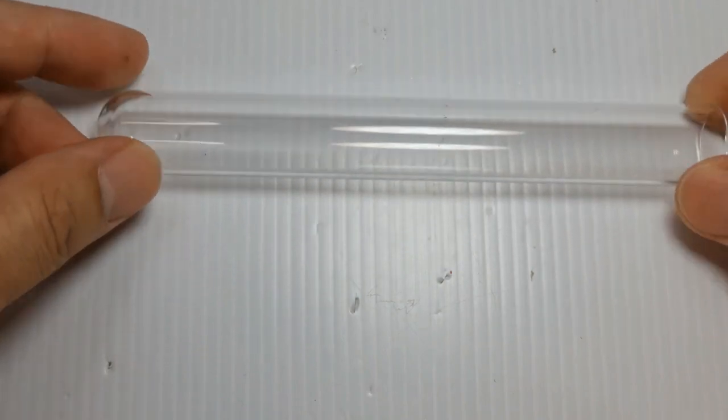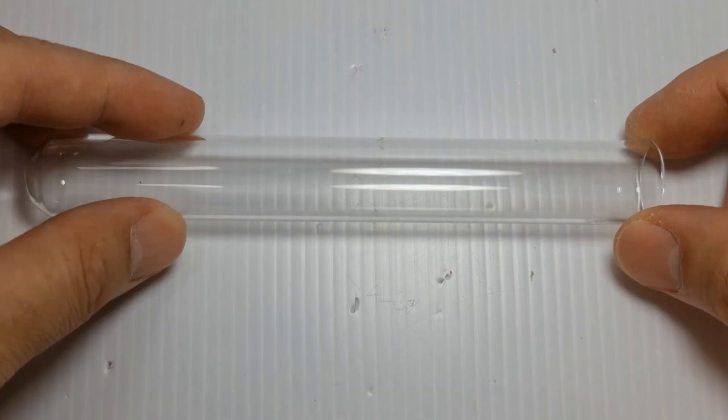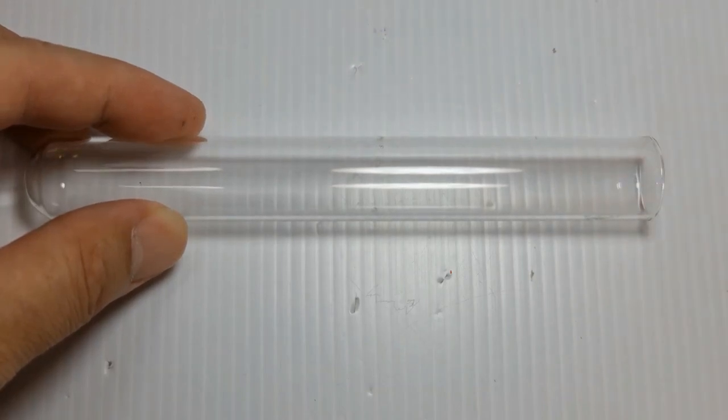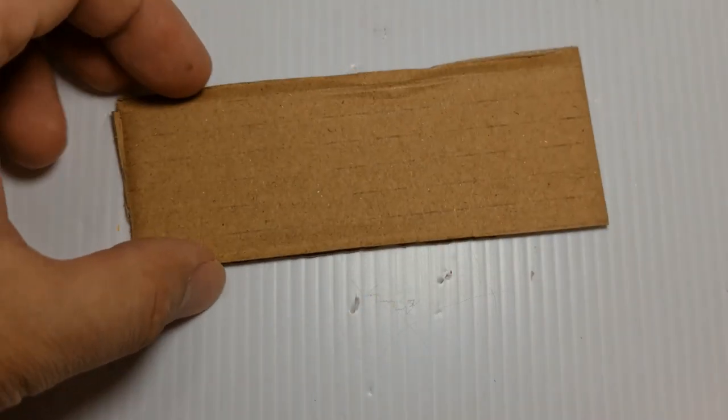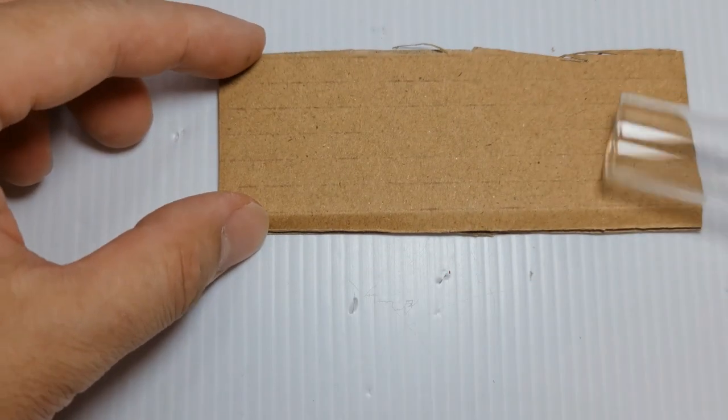Tetraponera queen prefers a drier setup to any other ant species, therefore it is optional for the typical cotton and water setup. If you want to put cotton and water at the end, it is fine, just make sure it's thick and not overly wet. I personally have tried the dry setup, but do ensure you give the queen some form of hydration on the outworld or feeding area.